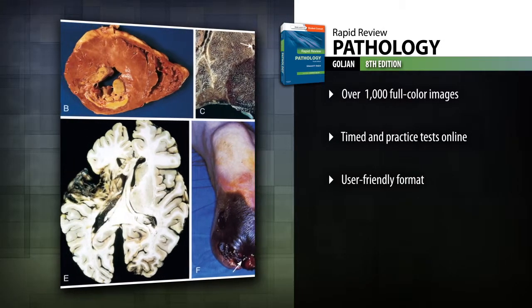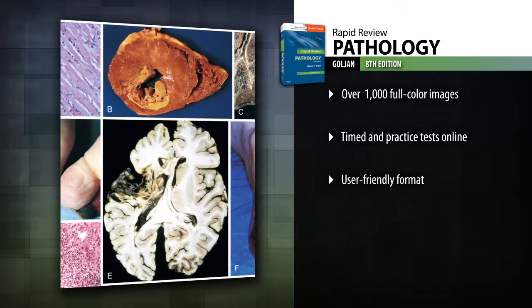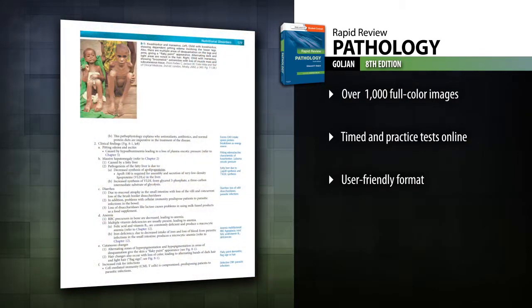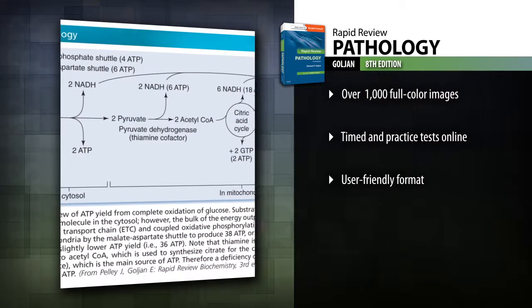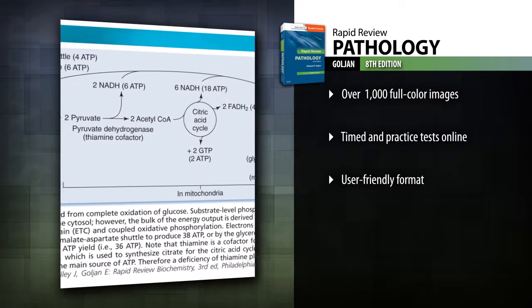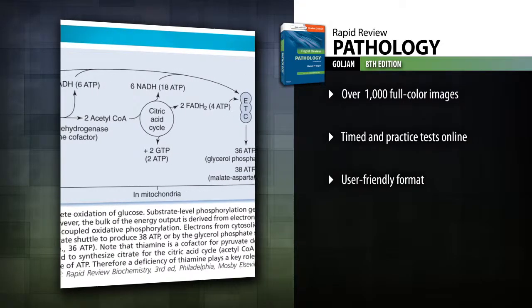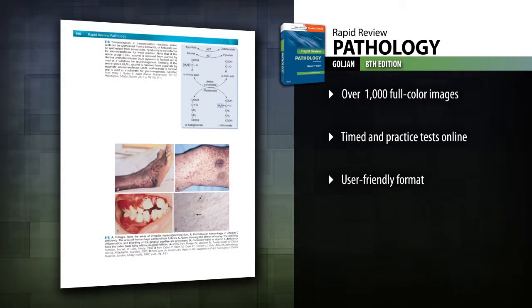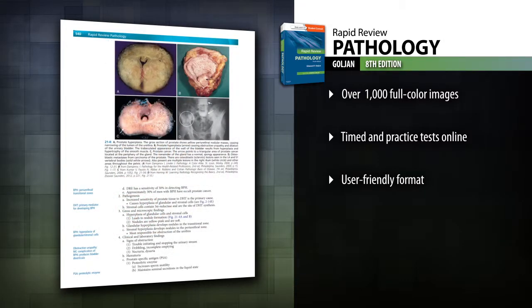Visualize key pathologic concepts and conditions with over 1,000 full-color images, completely reviewed and updated for this new edition. Review all the information you need to know quickly and easily with a user-friendly, two-color outline format that includes high-yield margin notes and key points.